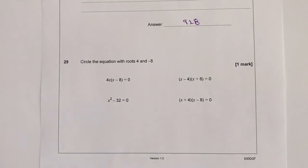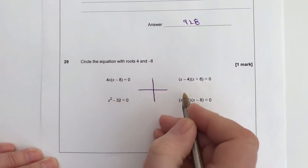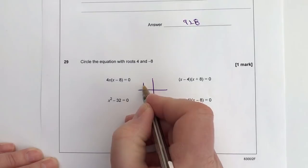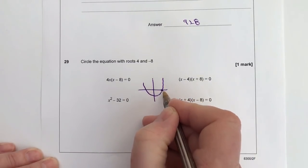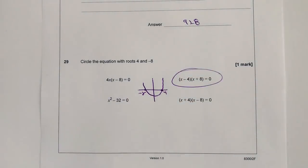Question number 29. It says circle the equation with roots of 4 and minus 8. Again, this is one of those questions where you sort of need to know it really. But what they're talking about is equations, quadratic equations. And what we've got here is, in this particular case, I've got a root of 4 and a root of minus 8. So it's actually that one there.